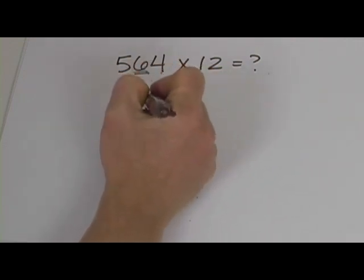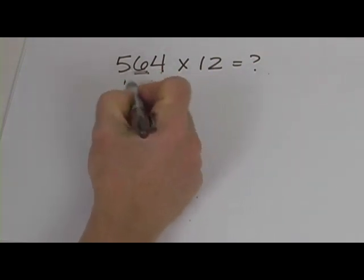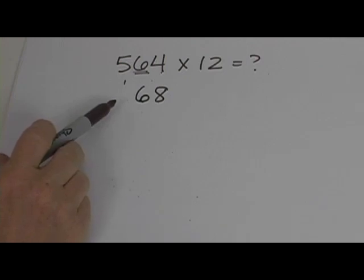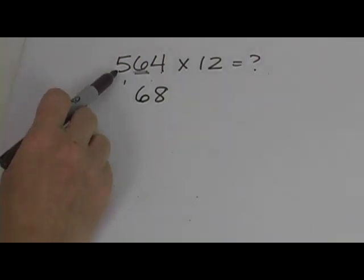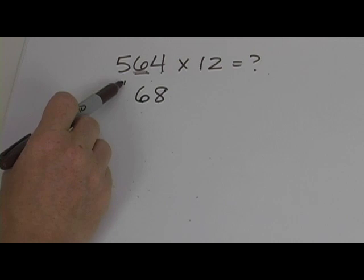Remember, 16 is a 1 and a 6. I'm only going to put the 6 here because I'm going to carry that 1 onto this next number that I write down. So what is the next number? Well, I'm going to take the 5 and double it. 5 twice is 10 plus 6 is 16 plus that 1 from before is 17.